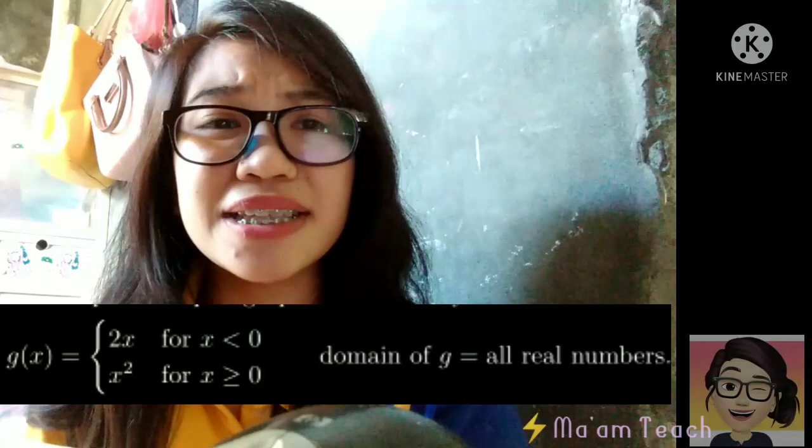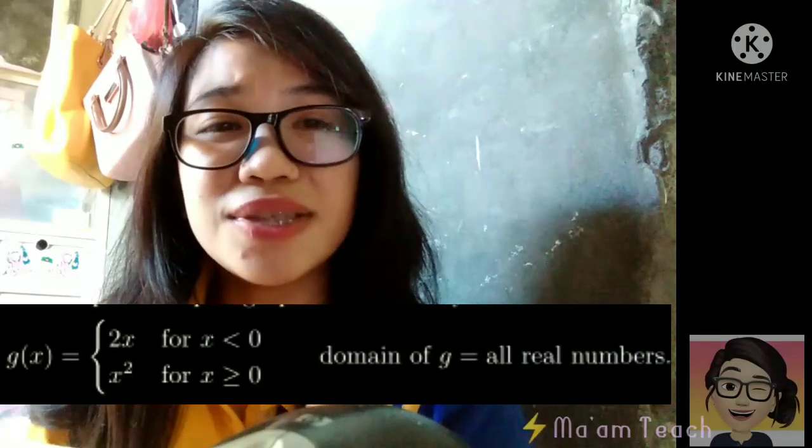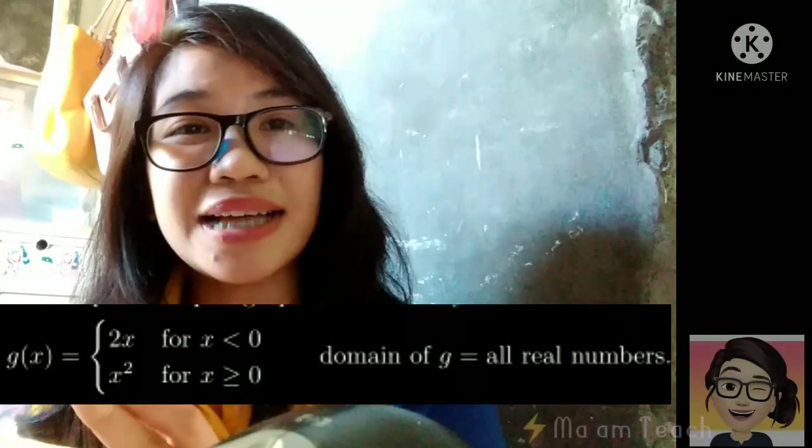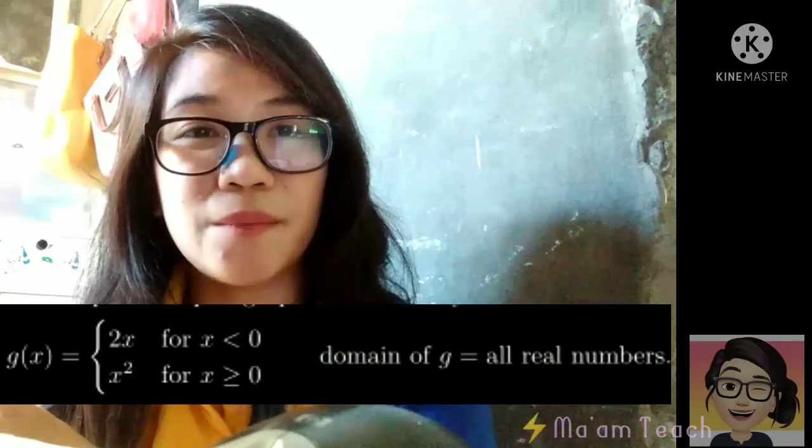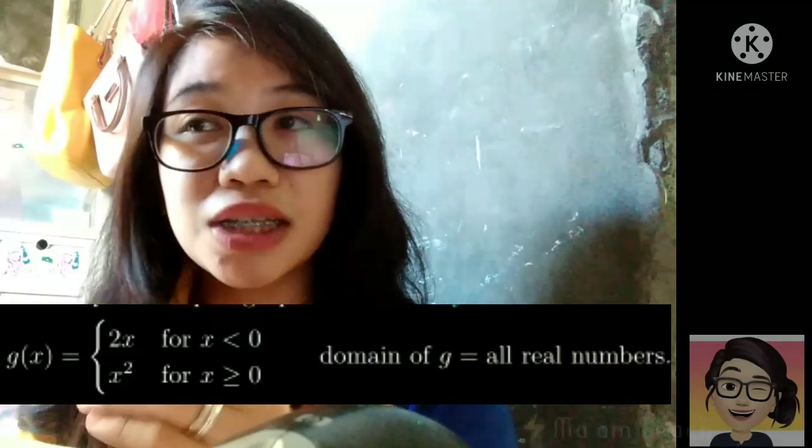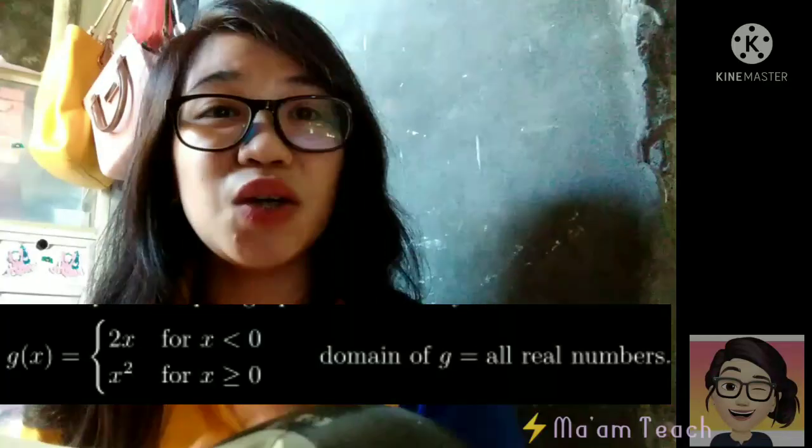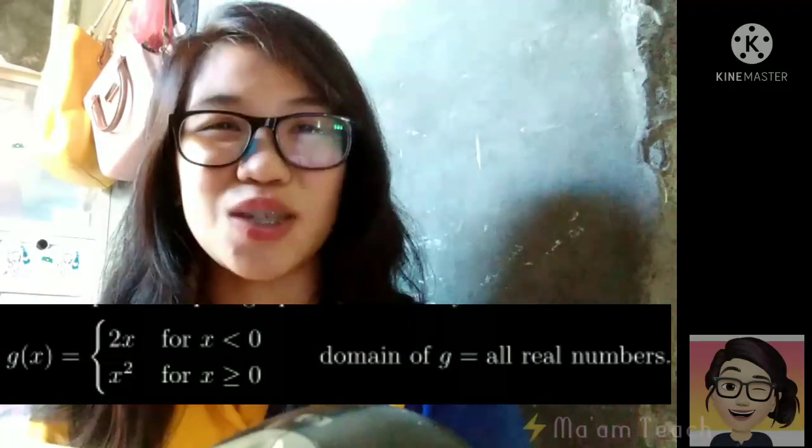So ano yung mga values ng x na yun? So, from 0, papunta sa lahat ng positive numbers. Or lahat ng positive numbers including 0, yan lang yung gagamitin mo dito sa x squared. Understood?